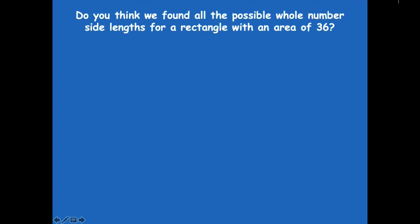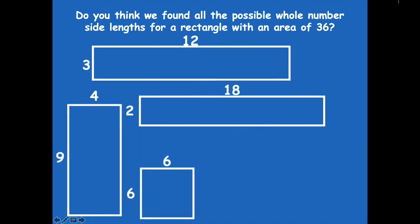Do you think we found all the possible whole-number side lengths for a rectangle with an area of 36? I'm going to go through from one to ten to check. Here are the rectangles we came up with: a nine by four, a three by twelve, a two by eighteen, and a six by six. Do I have a rectangle with a side length of one? No — that's the easiest one: one times 36. Sometimes we forget about that one because it's so easy. Do we have a side length of two? Yes, two by eighteen. How about three? Yes, three by twelve. How about four? Yes, nine by four.